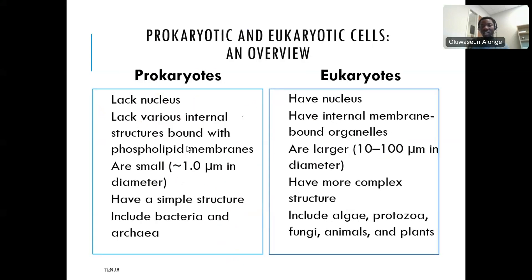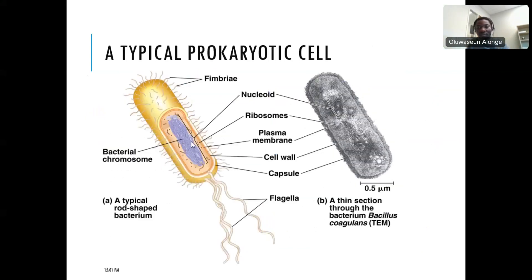Prokaryotic cells have a single circular DNA, whereas eukaryotic cells have multiple linear DNA. Prokaryotic cells are usually unicellular, whereas eukaryotic cells are mostly multicellular. Looking at this diagram of a prokaryotic cell, you can see the nucleoid region — that is where the chromosome is. It may look like many strands, but it's just one strand coiled on itself. We call it one circular chromosome — circular, coiled on each other.